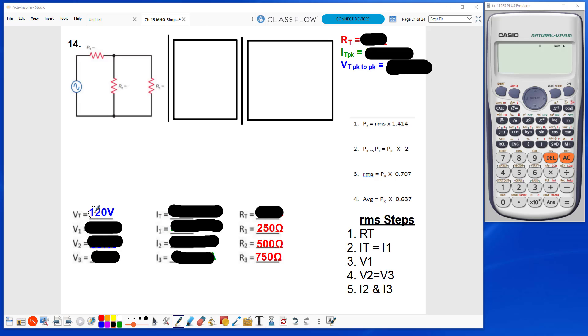I begin by filling in my known values. This is a basic combination circuit, so my first objective is to find Rt.